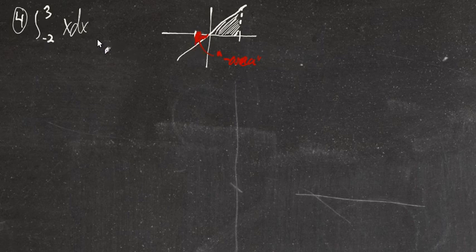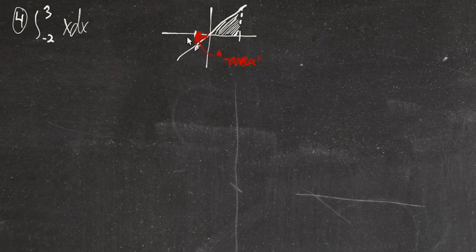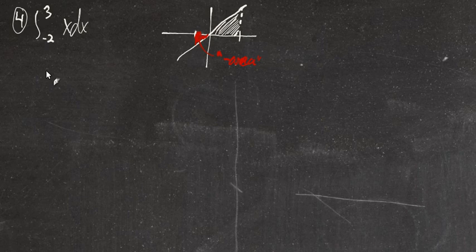The definite integral has its roots in the area question: what's the area under this curve? We split it up into a bunch of rectangles, and then we take those rectangles and break it into what's called a Riemann sum. We say that's a more generalized case — maybe those rectangles aren't the same width. We allow them to be negative, and all these things happen.